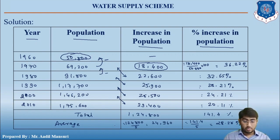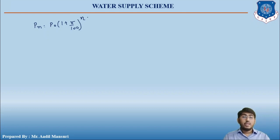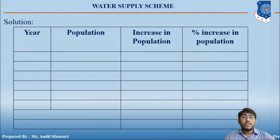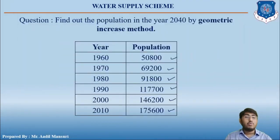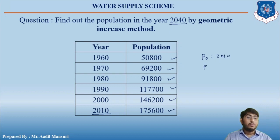Recalling the formula: Pn equals P0 into (1 + r/100) raised to n. We have to find the population in the year 2040. The last known population is from 2010, so P0 corresponds to 2010, and Pn corresponds to 2040.